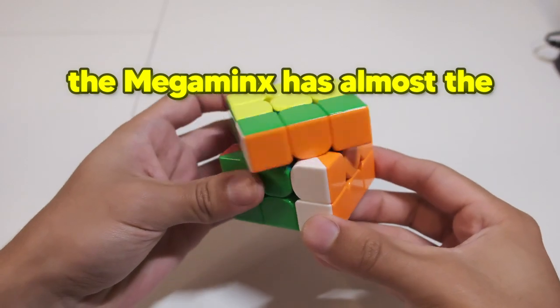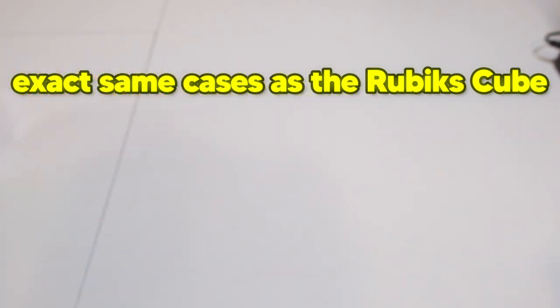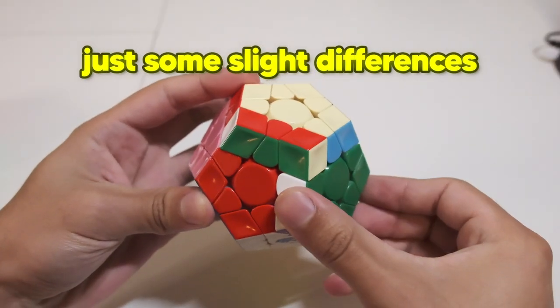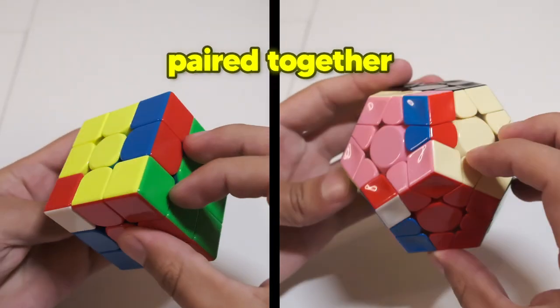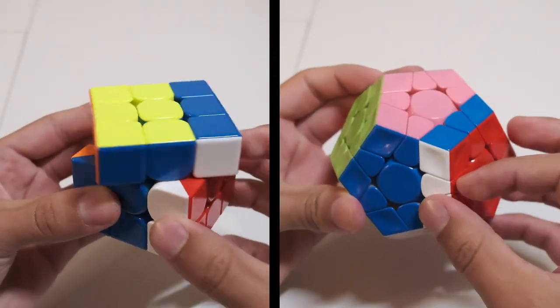During F2L, the Megaminx has almost the exact same cases as the Rubik's Cube, just some slight differences in how the F2L pieces are paired together. This 3-mover, for example, is the exact same.